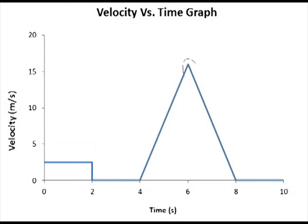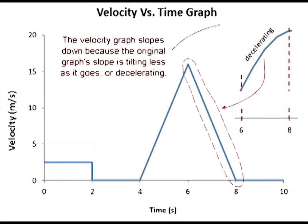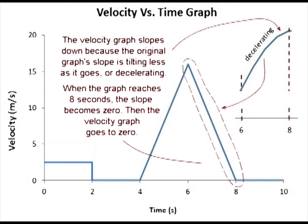And then again slowing down. Decelerating, sometimes also referred to as retardation. Now the velocity graph slopes down because the original graph slope is tilting less and less as it goes or decelerating. When the graph reaches 8 seconds, the slope becomes zero. Then the velocity graph goes to zero also.